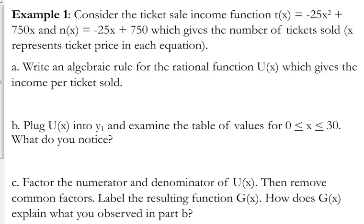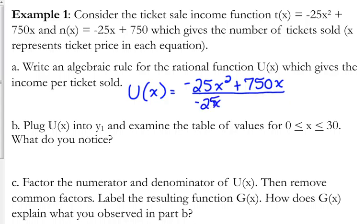Let's rewrite that algebraic rule for the rational function that gives the income per ticket sold. So that function, u of x, is equal to the income function on top, so negative 25x squared plus 750x over the tickets sold function, negative 25x plus 750.